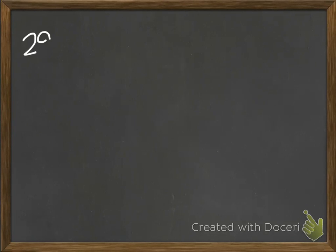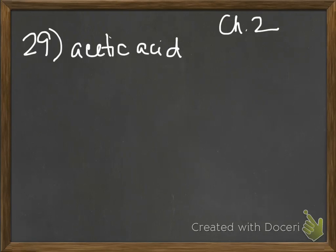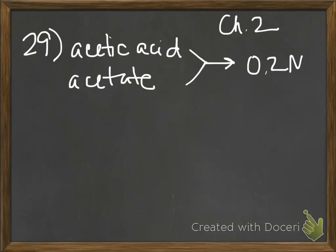So this is number 29 from chapter 2, and you need to calculate the concentration of acetic acid and sodium acetate necessary to make a 0.2 molar buffer solution at pH 5.